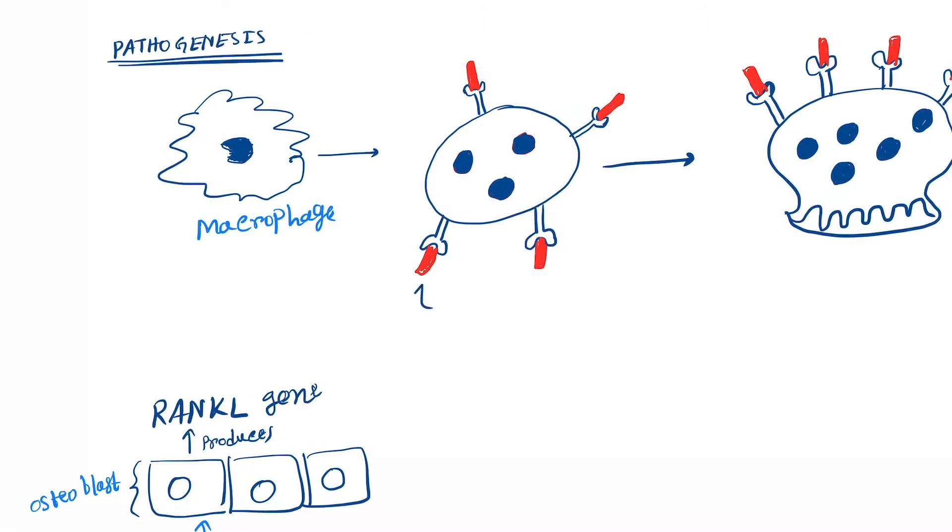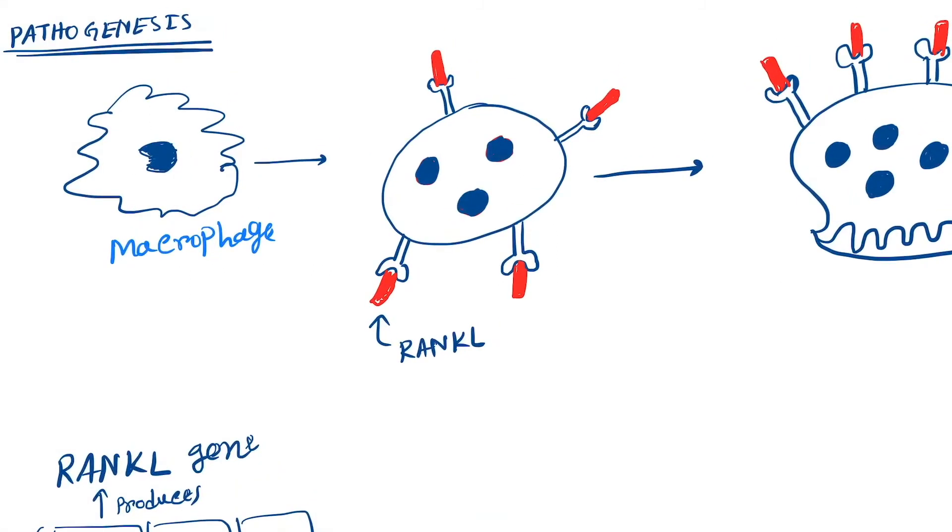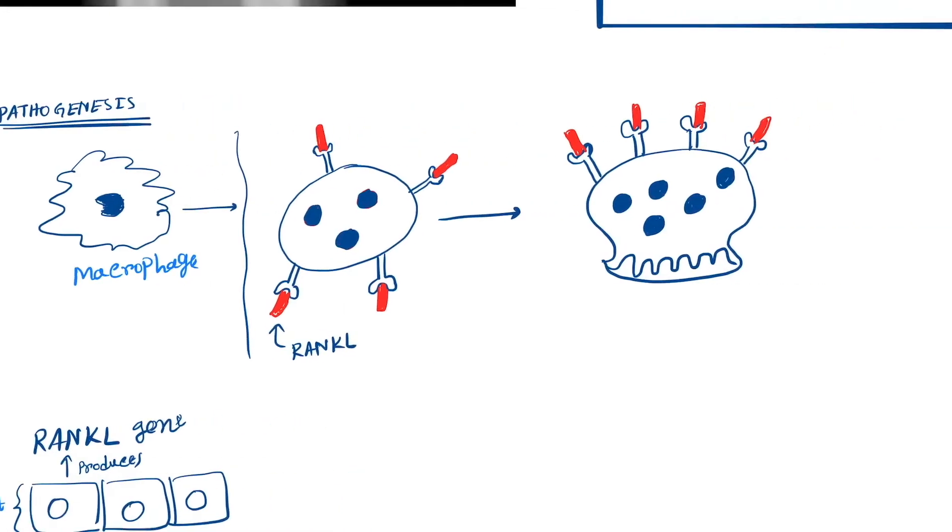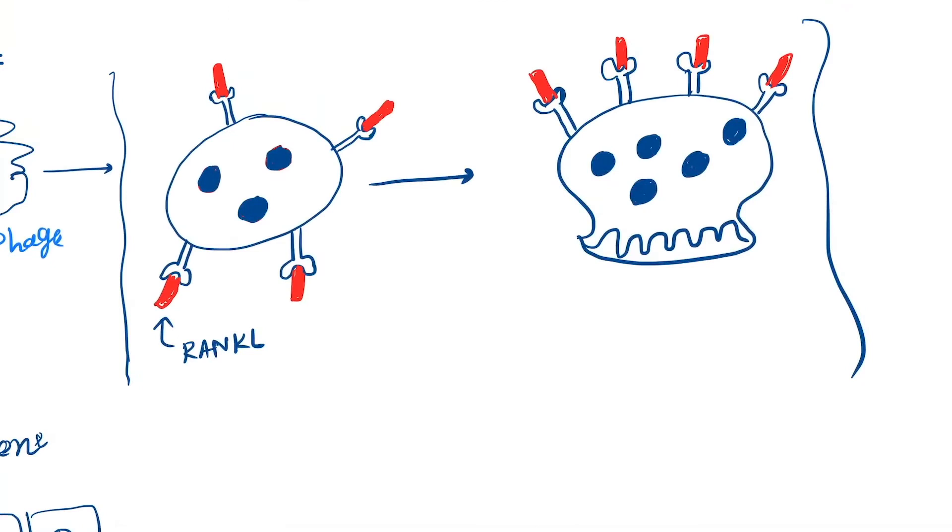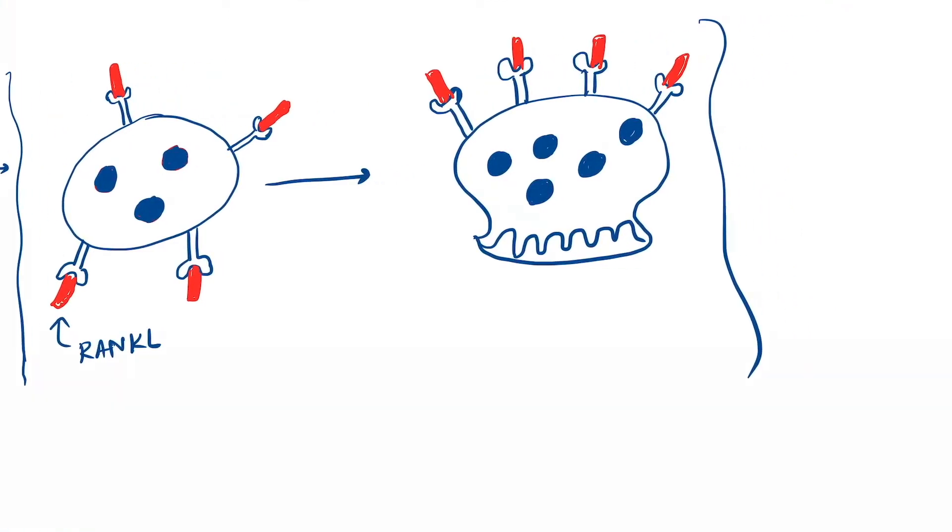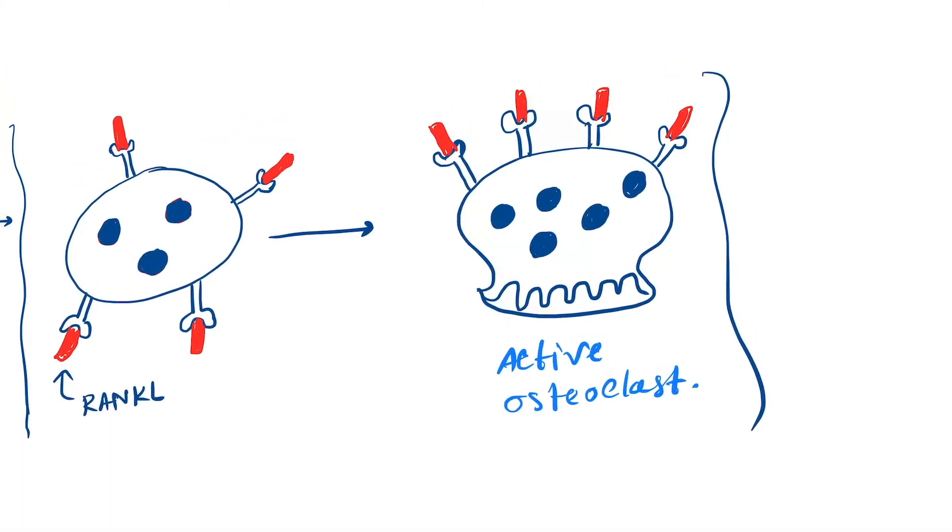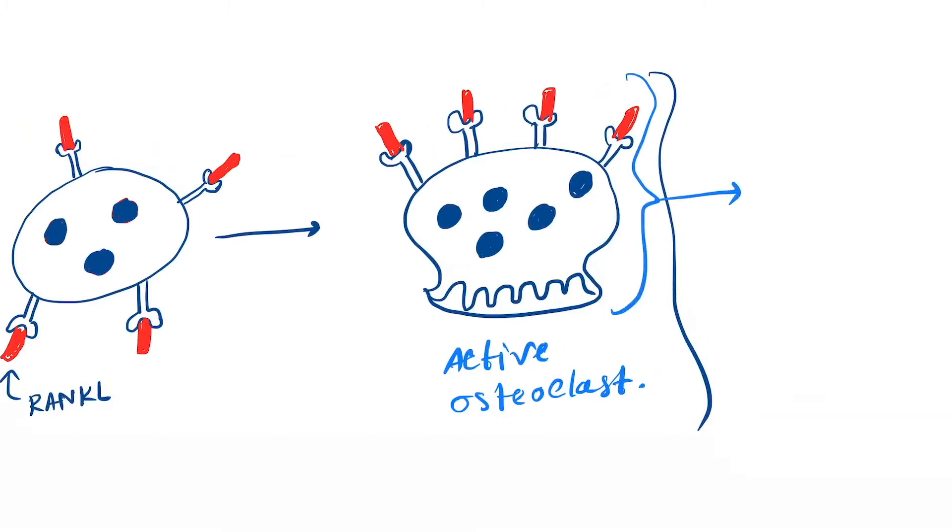RANKL attaches to the macrophage receptors and it starts to become a multinucleated osteoclastic cell. Here you can see the active osteoclast, which will cause bone resorption.